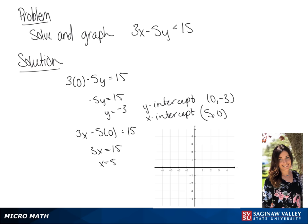Now we're going to plot these two points and draw our line, which will be a dotted line since it is a less than problem.